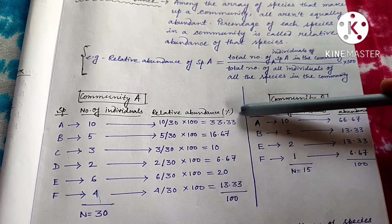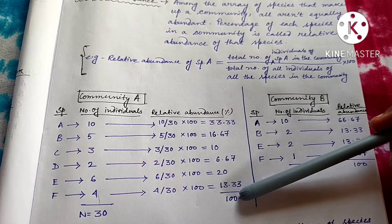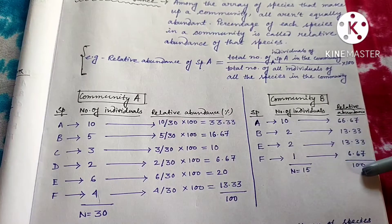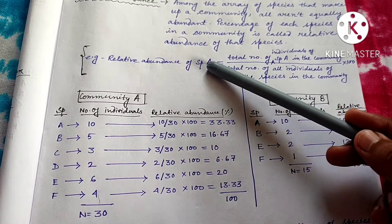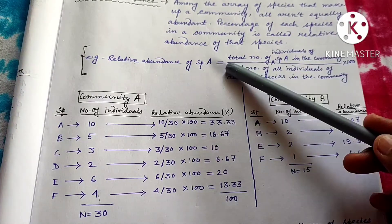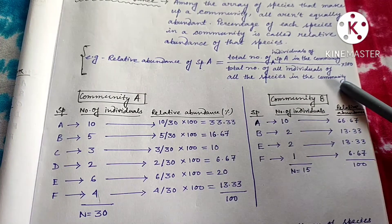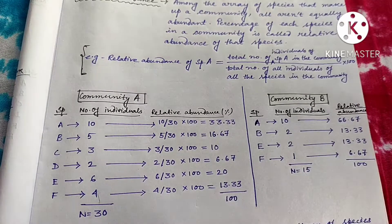If we present it in percentage, then the total will be 100, and if we present it in proportion, then the total will be 1. Similarly, in Community B we can also get the relative abundance in percentage value. The formula of relative abundance of any species is: the total number of individuals of that species in the community divided by the total number of all the individuals of all the species in that community, multiplied by 100 if we want to represent it as a percentage. This is the idea of relative abundance.